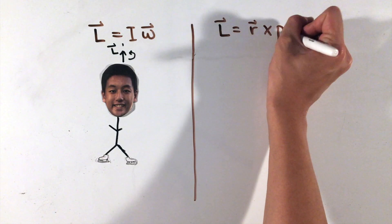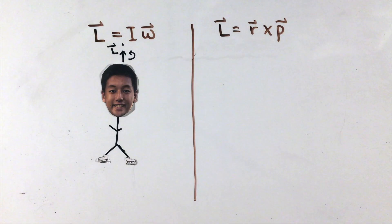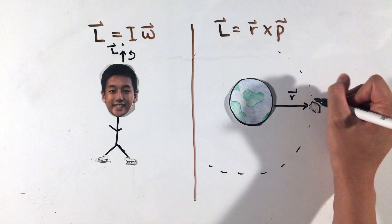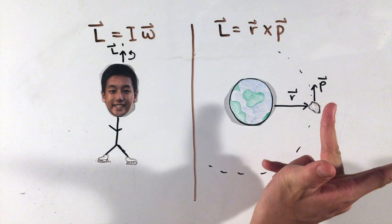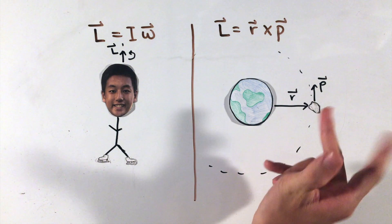The other equation is a cross product between radius and linear momentum P vectors, whose direction is found through another version of the right-hand rule: pointing your right index finger in the R direction, right middle finger in the P direction, with your thumb pointing in the L direction.